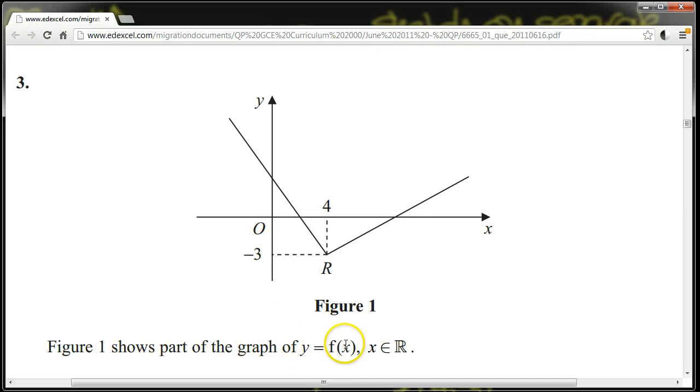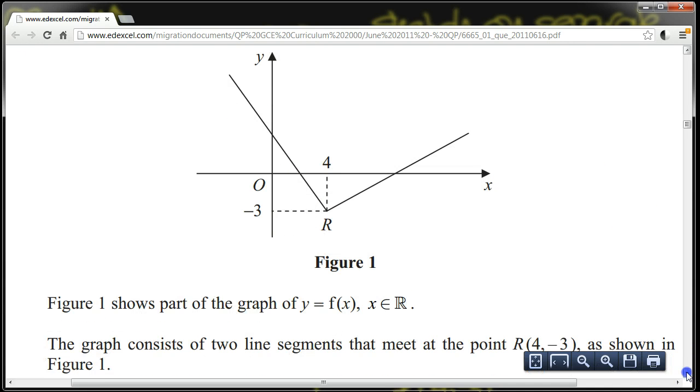Figure 1 shows part of the graph of y equals f of x for x belonging to R. The graph consists of two line segments that meet at the point R (4, -3), as shown in figure 1.